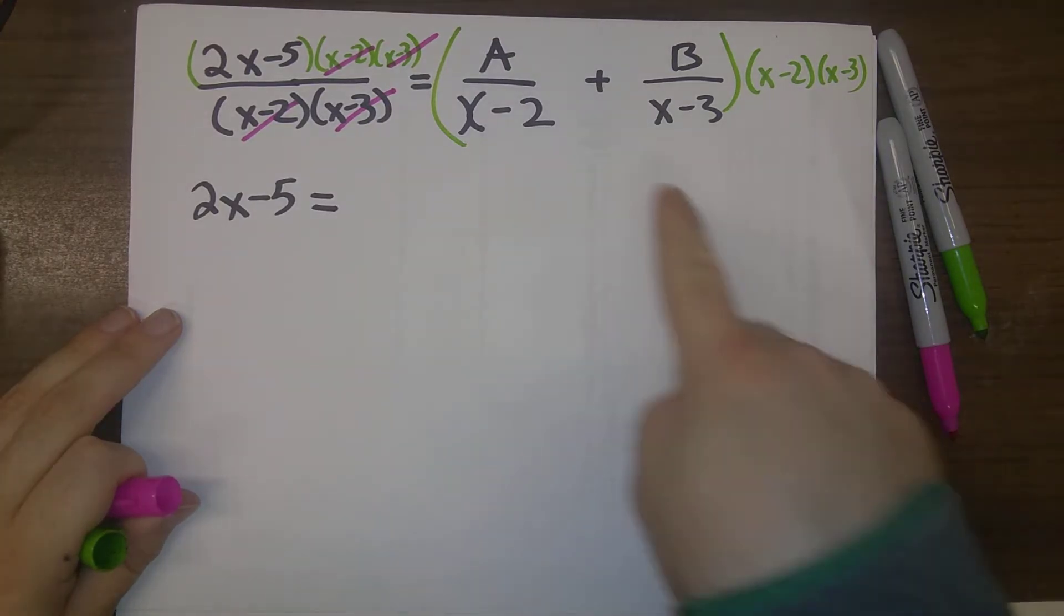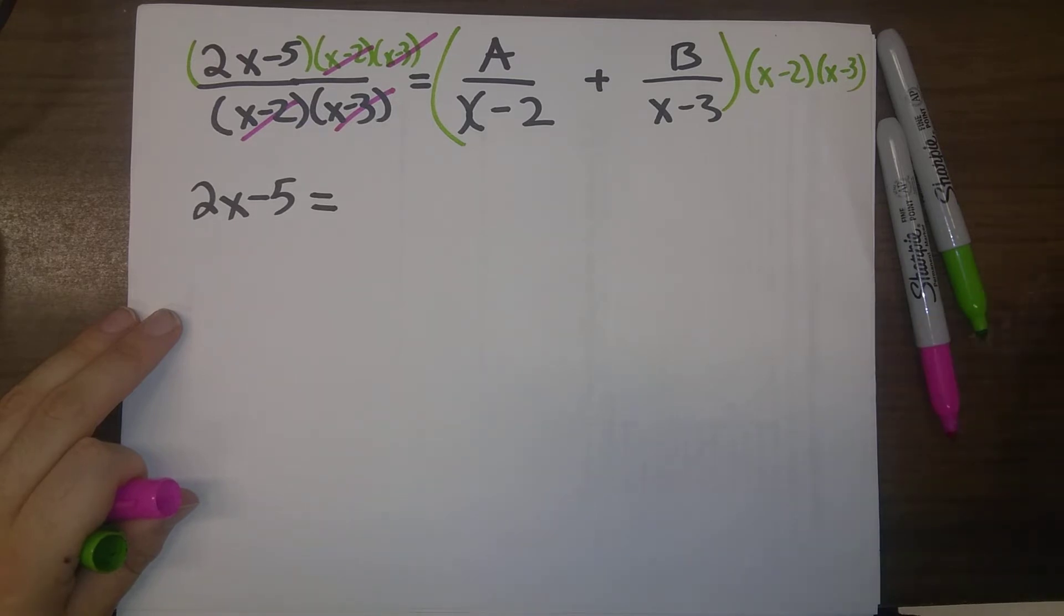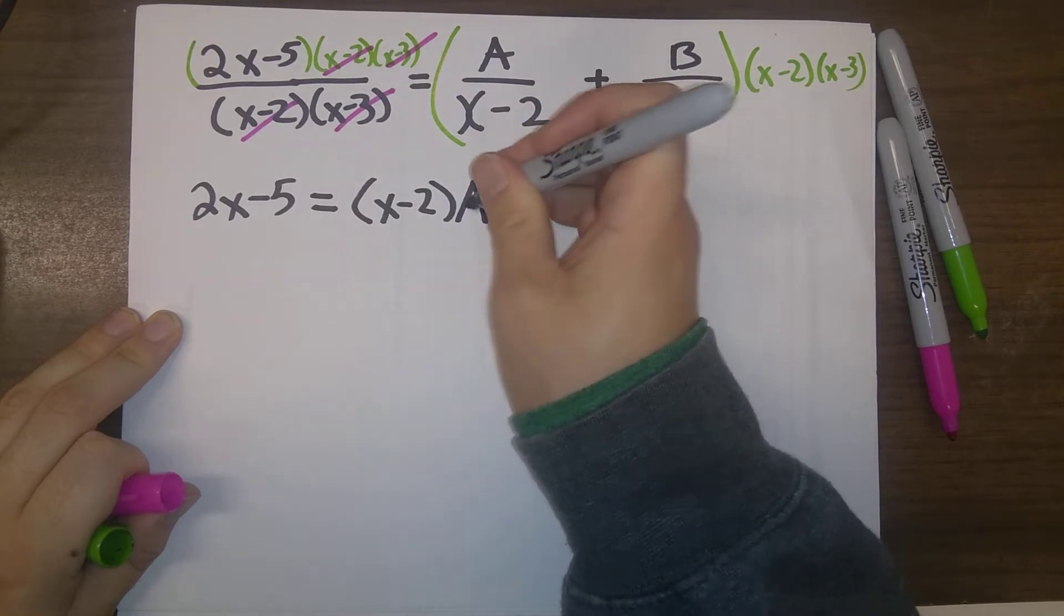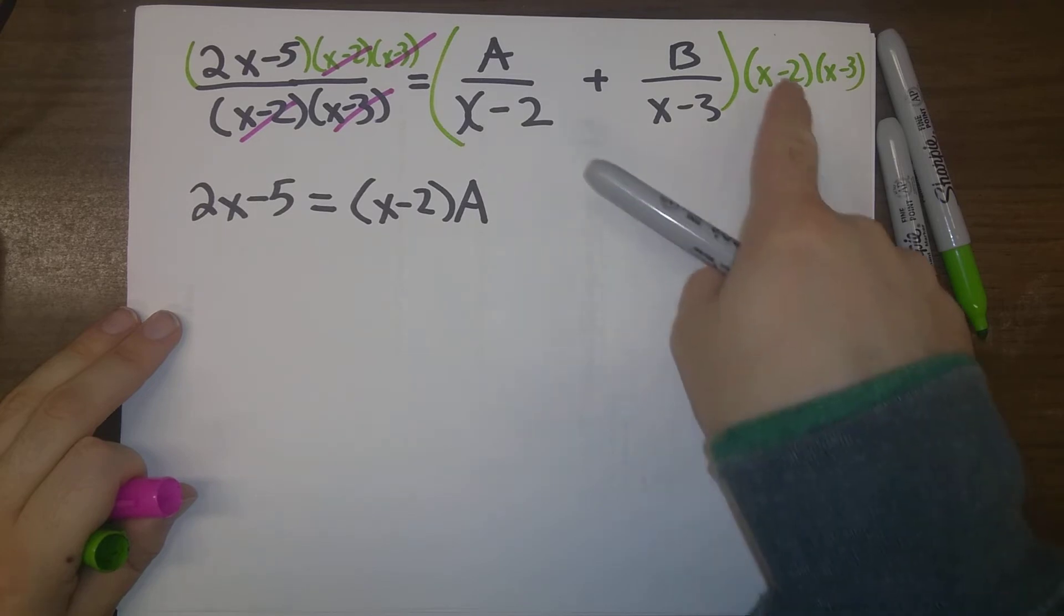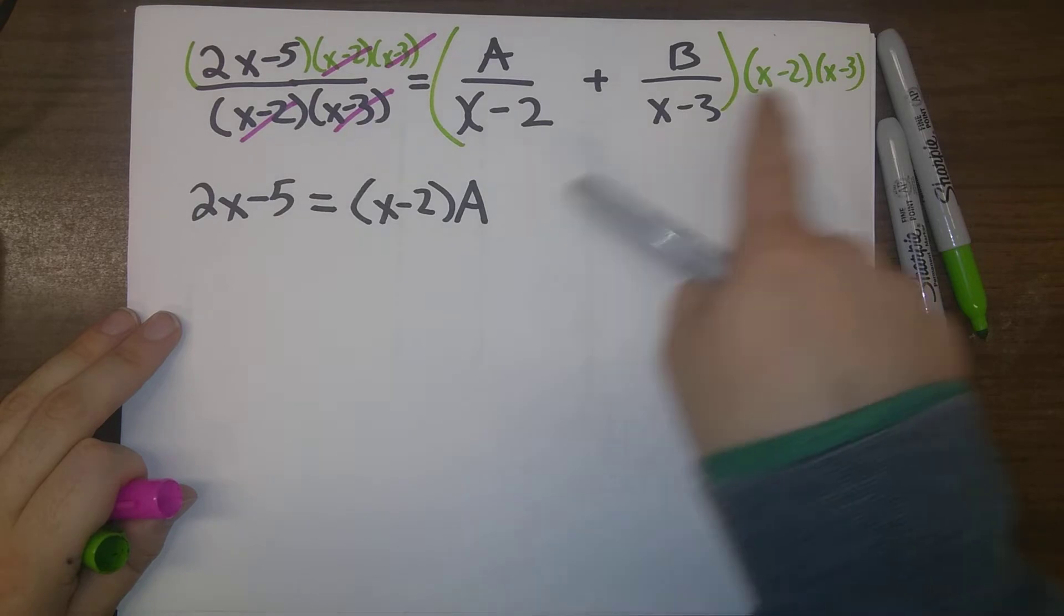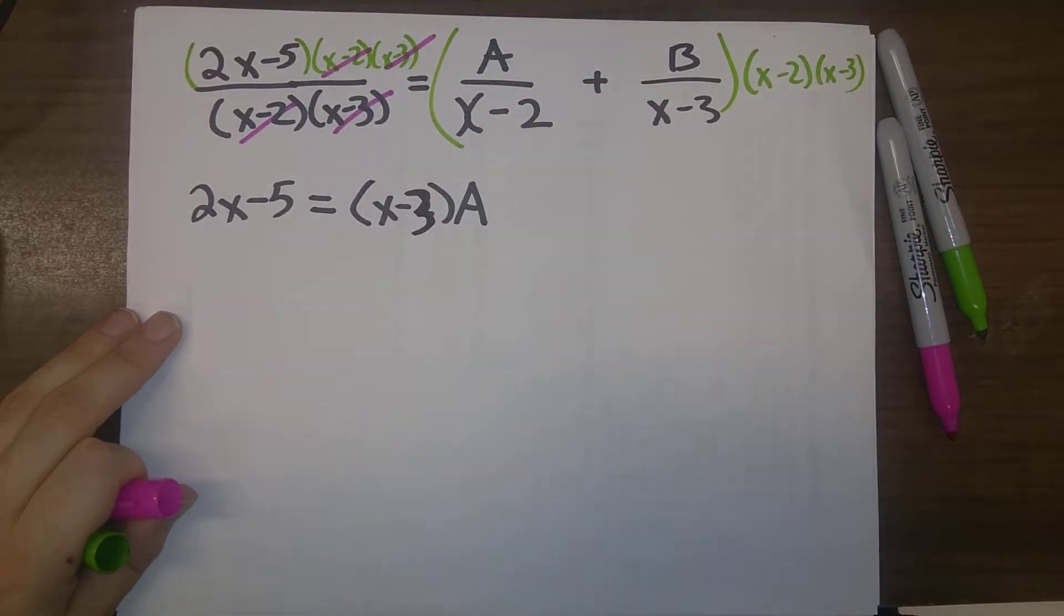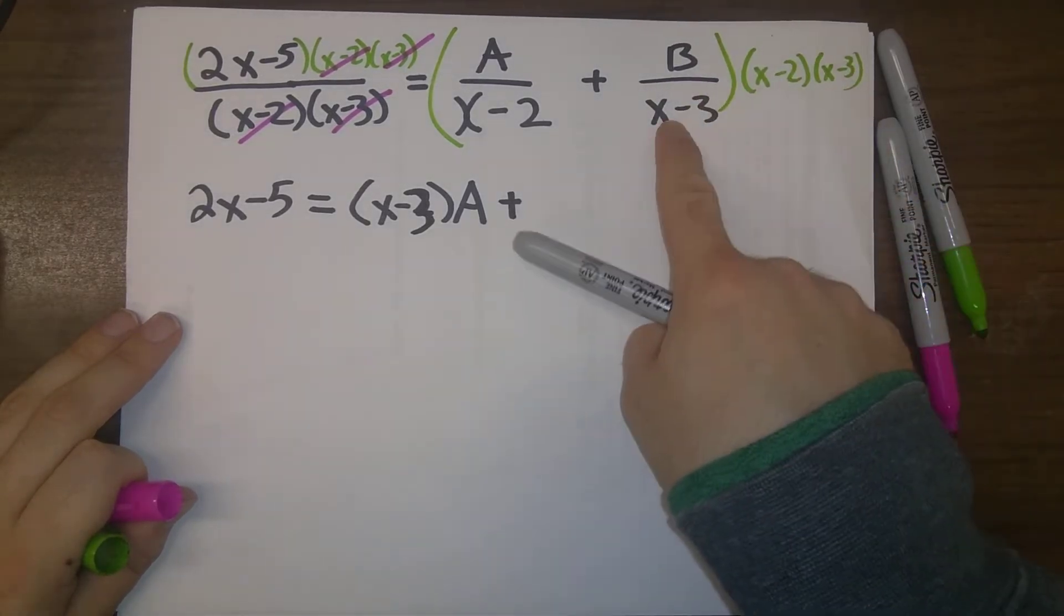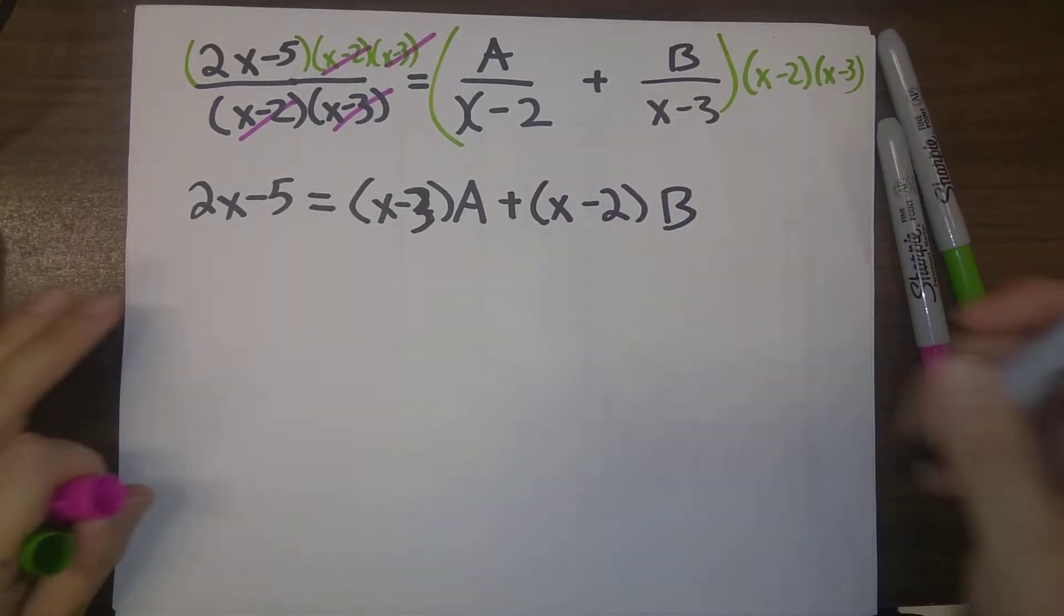And on the right, the x minus 2 will cancel with this x minus 2. So we'll just be left with x minus 2 times A. Wait, sorry, what's going on here? This x minus 2 cancels with this x minus 2. I got this wrong. The thing that's left over is that x minus 3. Now, for this B here, the x minus 3 cancels with x minus 3. And now it's the x minus 2 factor that's left here.